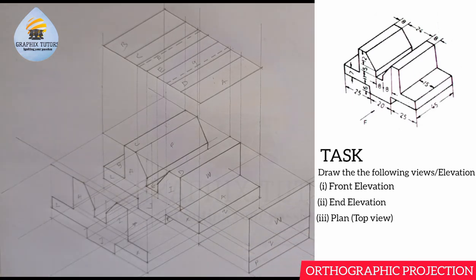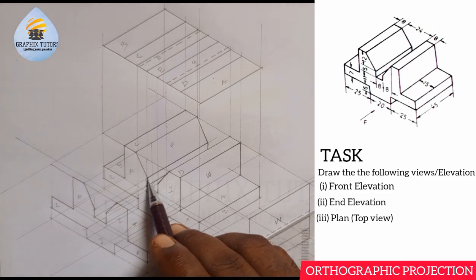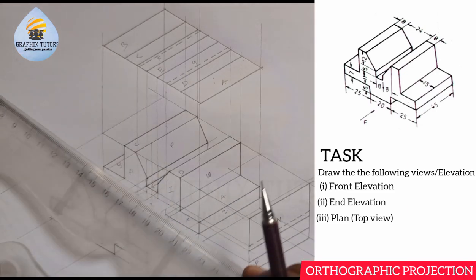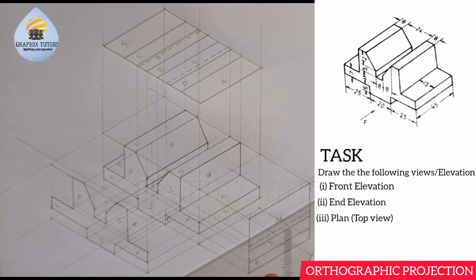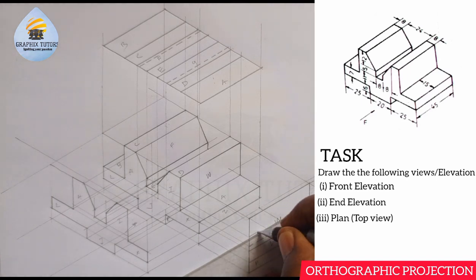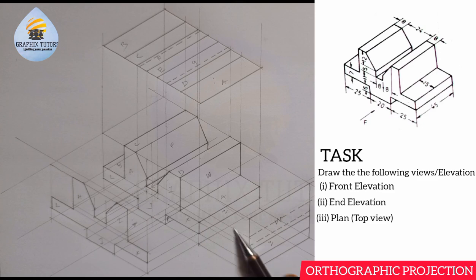Touching here, so that would be a hidden line at this point here. I'll have this this way because we cannot see it from that side, so I'll put hidden lines. Similarly, this point too — you cannot see it from that side. So that will be another hidden line. This is what we have here looking from this side — these are the things we are going to be seeing. That is the end elevation.